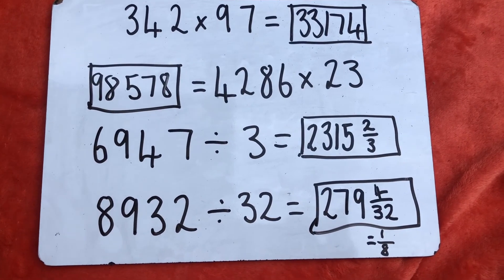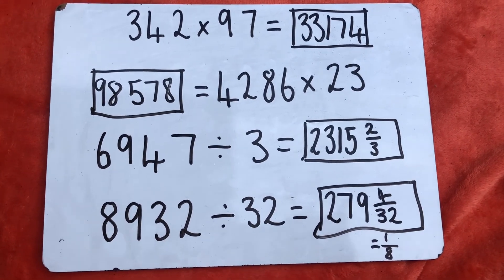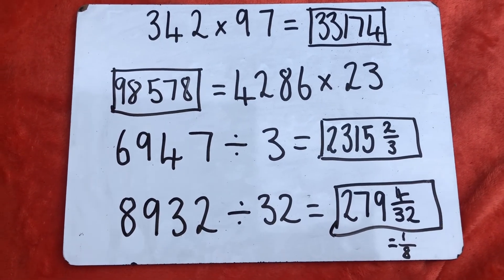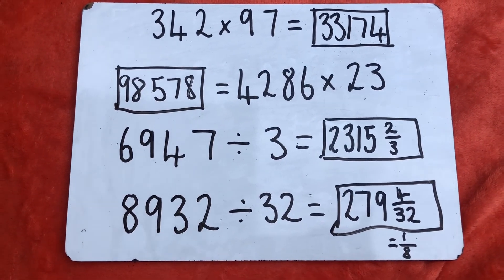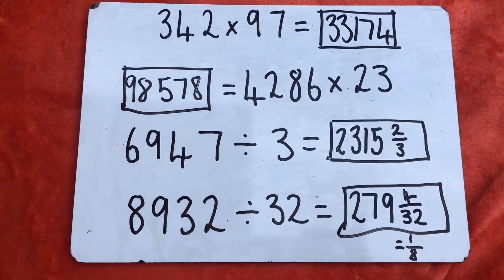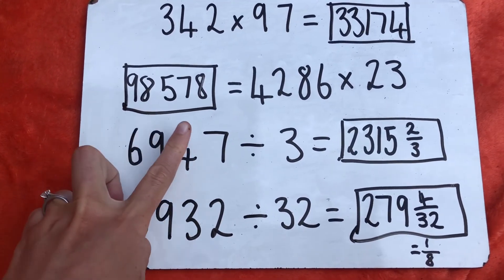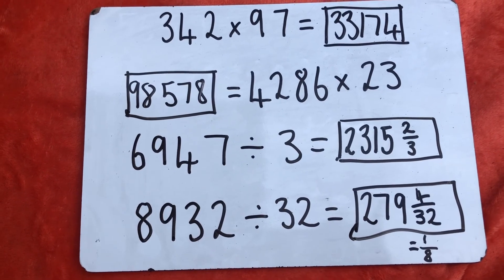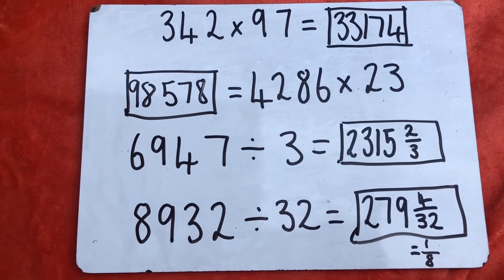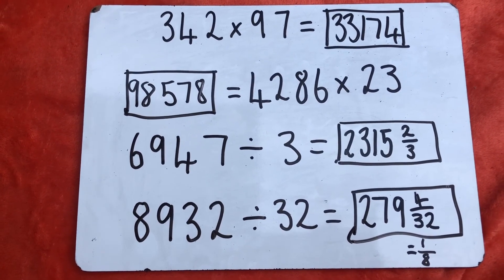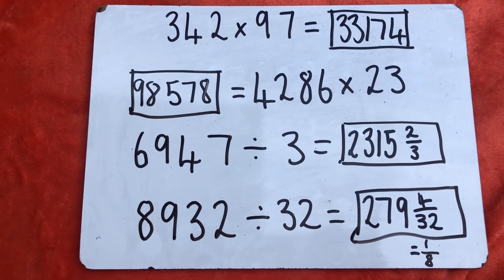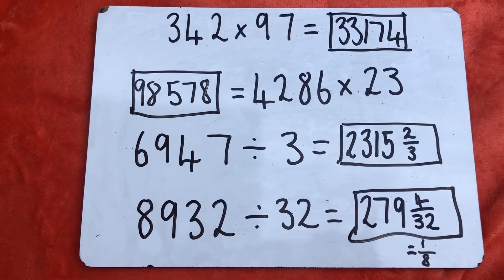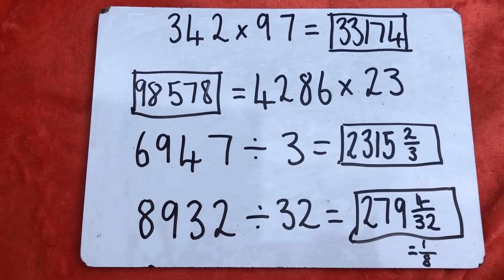Here are your answers. Don't worry if you've made a mistake — we all make mistakes. It's likely that it's just one of the digits that's wrong. So go back and check, and well done for your hard work on multiplication and division.